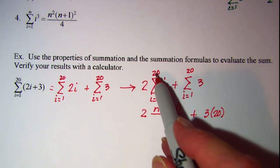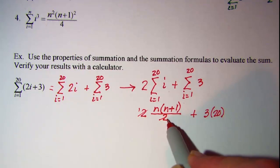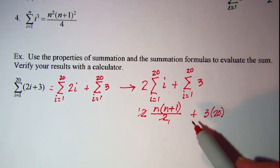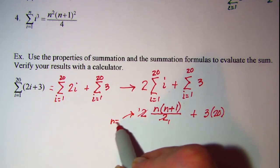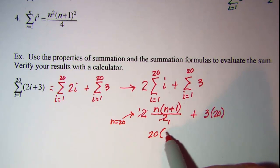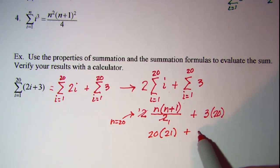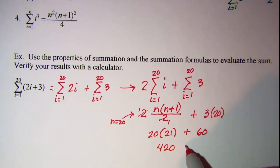My N in this case is 20. I'm going to go ahead and cancel my 2's. This 2 is in the numerator and this one's in the denominator and for this problem N is 20. So I have 20 times 21 and then plus 60. So 20 times 21 is 420 plus 60 which gives me 480.